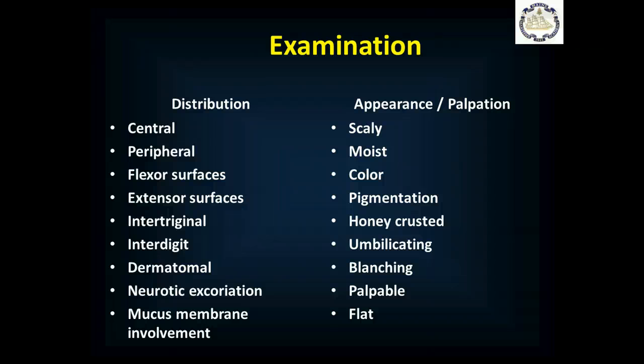Is it between the digits — between the fingers? Is it in the dermatomes? A dermatome is the narrow area that each skin nerve gets its sensation from, stacked one on top of each other. So is it in one dermatome, or is it patchy and blotchy and all over the place? Is there neurotic excoriation — that is, is there only a rash or scratching where the patient can reach and everywhere else is fine? And are the mucous membranes involved? Because that gives you different ideas about what might be going on.